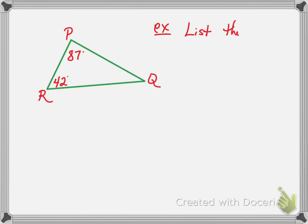Next, let's draw a triangle. We're going to say that this angle is 42, this one is 87. And this is P, Q, R. For this example, we want to list the sides in order from least to greatest.